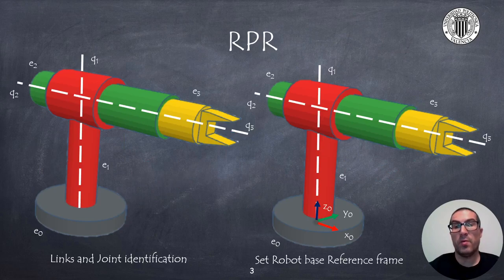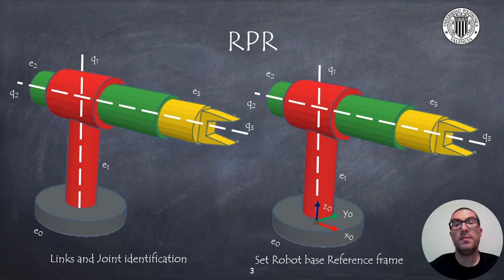The RPR robot has three joints: a first revolute joint, followed by a prismatic joint, and a third revolute joint. The first step is the identification of robot links and joints. In the figure on the left I have indicated which are the links, numbered with the letter E from E0 to E3, and which are the joint axes, numbered from Q1 to Q3.